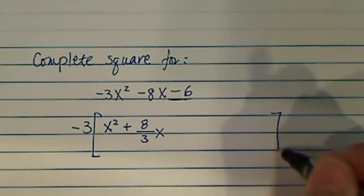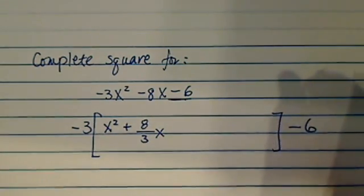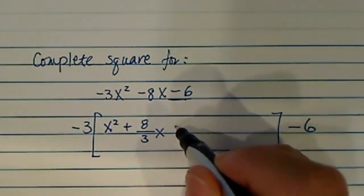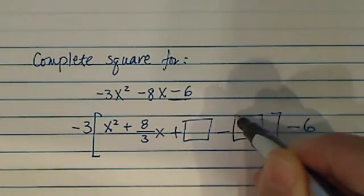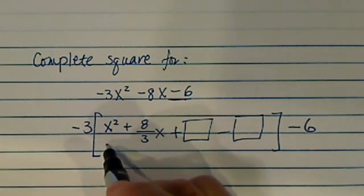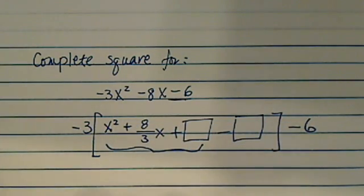And then I'm going to do is minus 6 all the way over there. The reason I have it over there is I'm going to add a number and subtract a number. The reason I add a number is I want the first 3 to become a complete square. That's what completing square means.